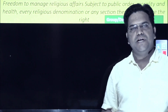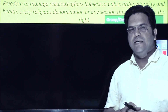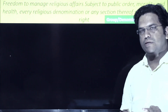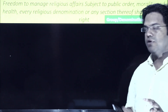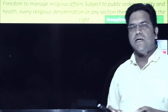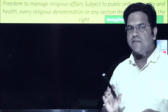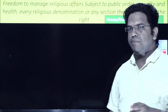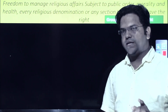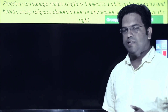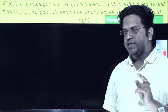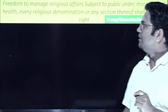Article 26 reads: freedom to manage religious affairs, subject to public order, morality, and health. There are three grounds on which the right extended under this article can be restricted — public order, morality, and health. Under Article 25 there are four grounds; the 'other provisions' portion is missing from Article 26.